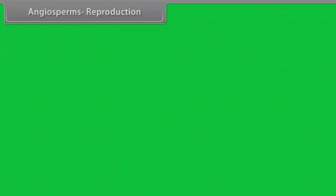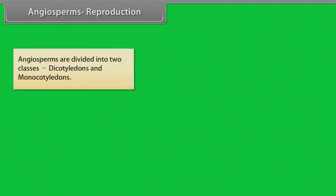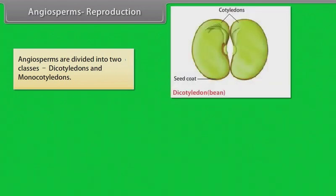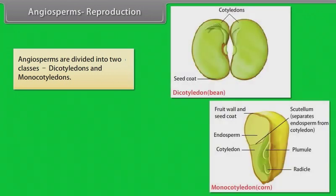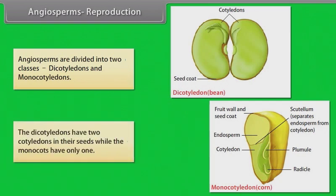Angiosperms Reproduction: Angiosperms are divided into two classes, Dicotyledons and Monocotyledons. The Dicotyledons have two cotyledons in their seeds while the Monocots have only one.